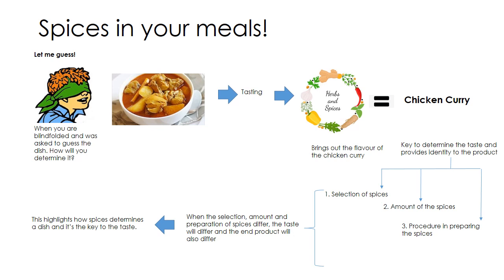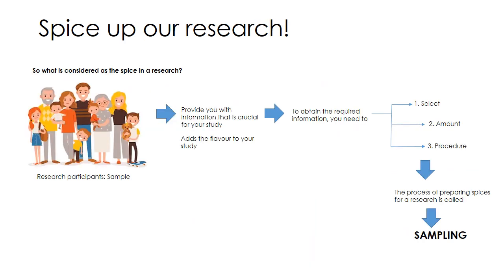When the selection, amount, or preparation of the spices differ, the taste will differ and the end product will also differ. If you want to do a fried chicken, it will definitely be a different set of spices, different procedures, and a different amount compared to cooking a chicken curry. This highlights how spices determine the dish — they are the key to the taste, and it is crucial which spices we use and how we use them.